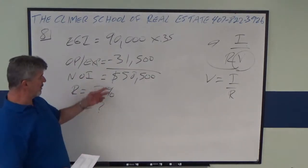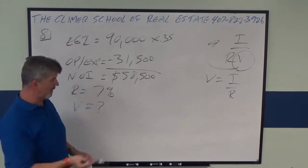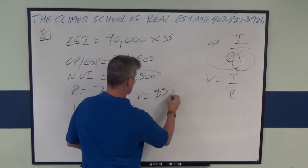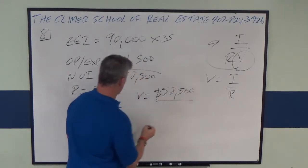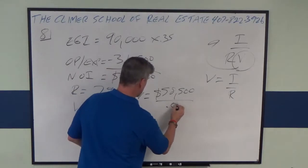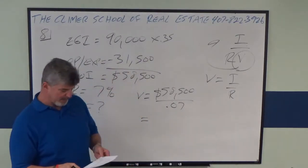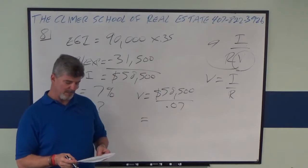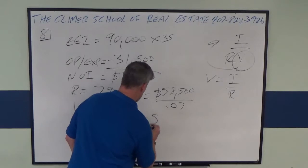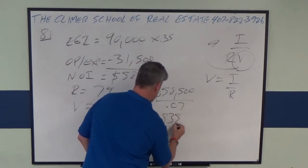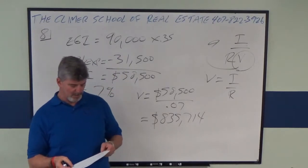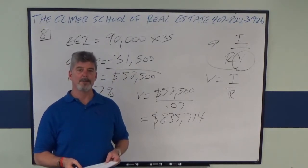Well, now we know two of them. We can solve for the third one. V equals I over R. So V equals 58,500 divided by 7%. And if you put that in your calculator, I believe you get a value of $835,714. And if we round down to the nearest hundred, that would be $835,700.